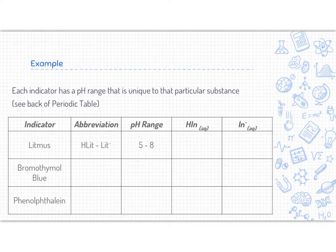So what we're going to do here is take a look at more indicators from your periodic table. The one that's not on there, though, is litmus. So I've written the abbreviation here for us: HLit or Lit negative would be the abbreviation for litmus. It actually has a different pH range. It's not 4.5 to 8, it's 4.5 to 8.3.